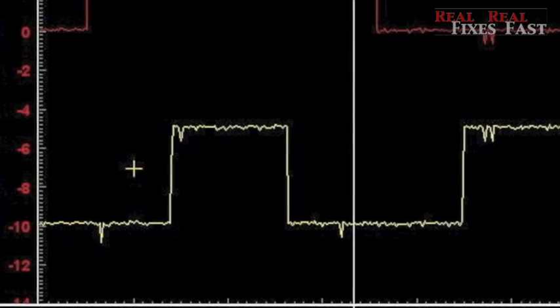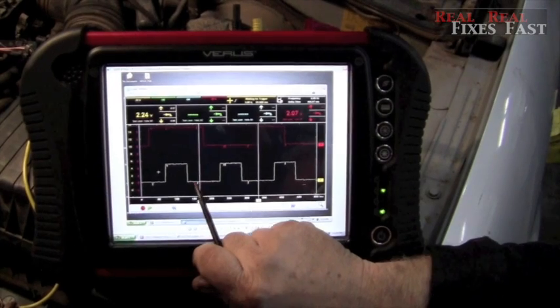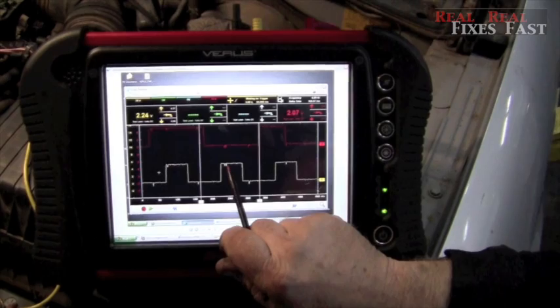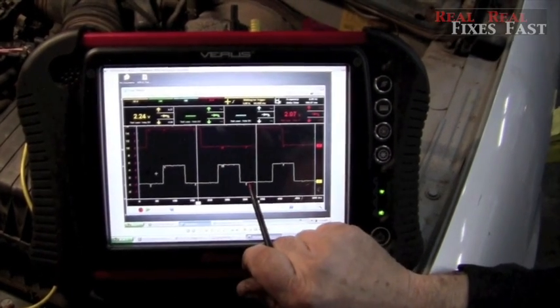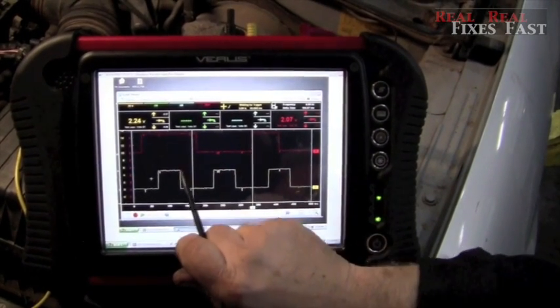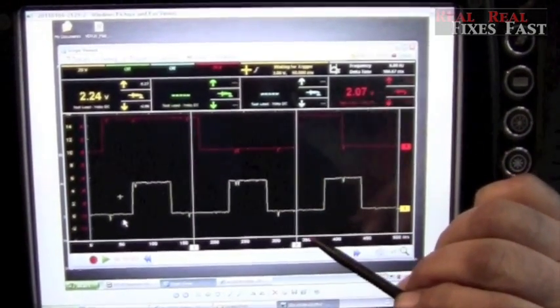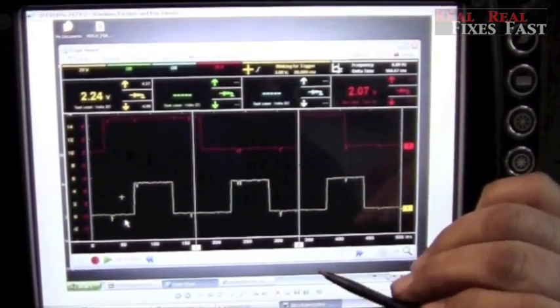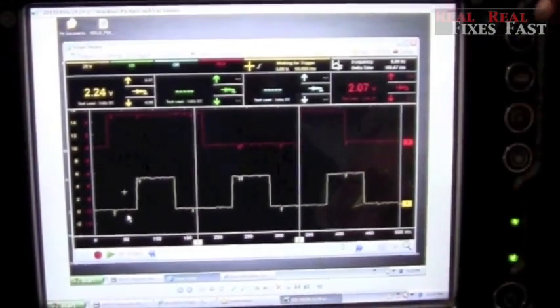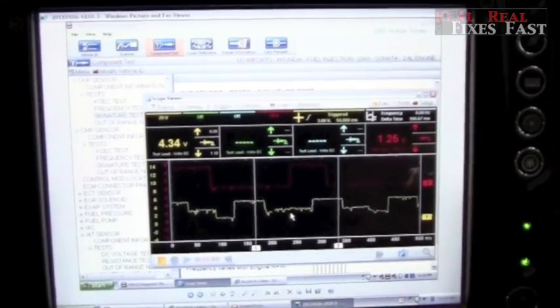You can see that we're going to ground every time. Now every once in a while, you're going to see a few little aberrant tracks in here. Those are okay. They're not really going to cause a problem. With the old sensor in there, the computer never saw it going all the way to ground, or rarely saw it going all the way to ground. That's why it wouldn't start and run.